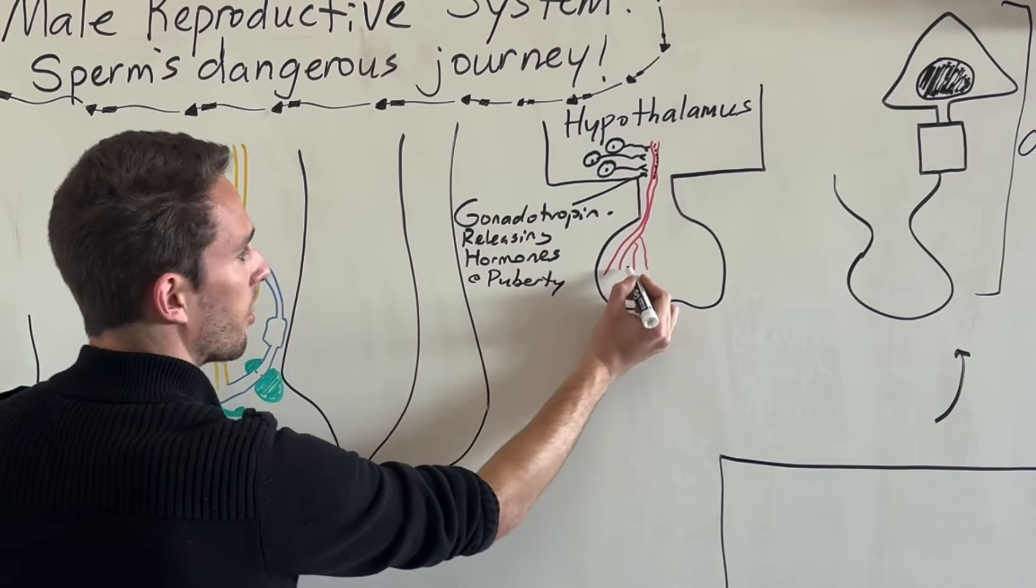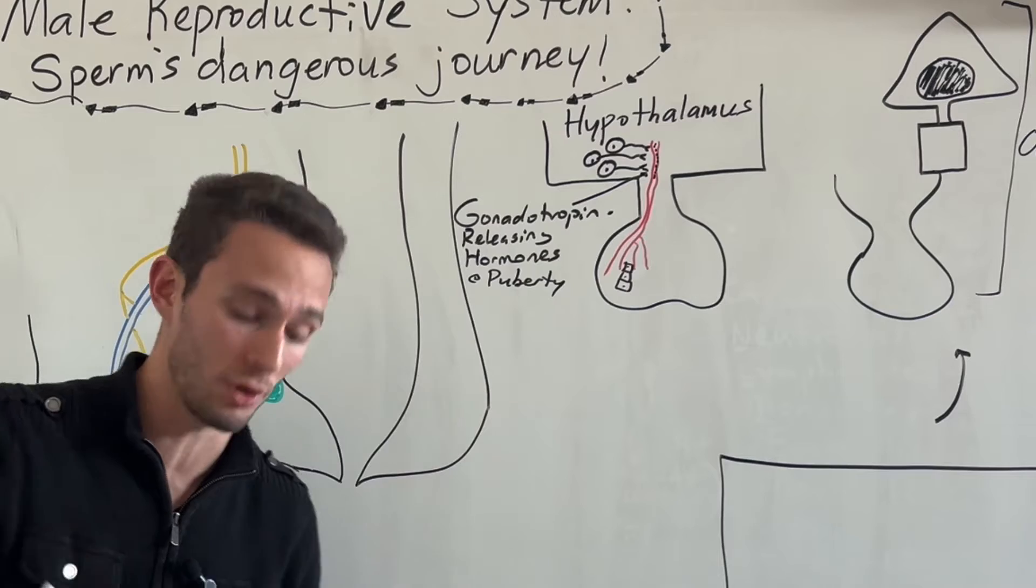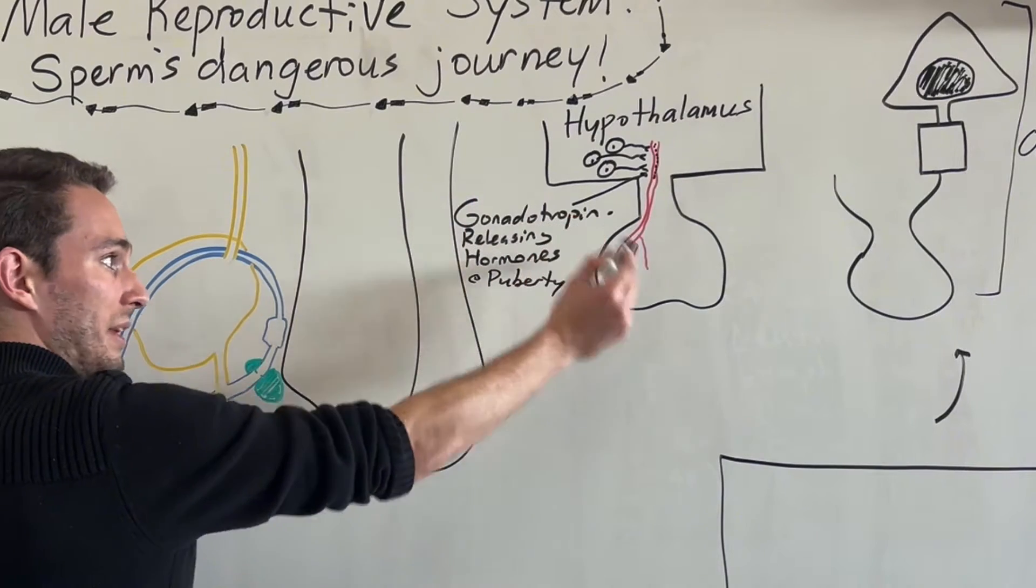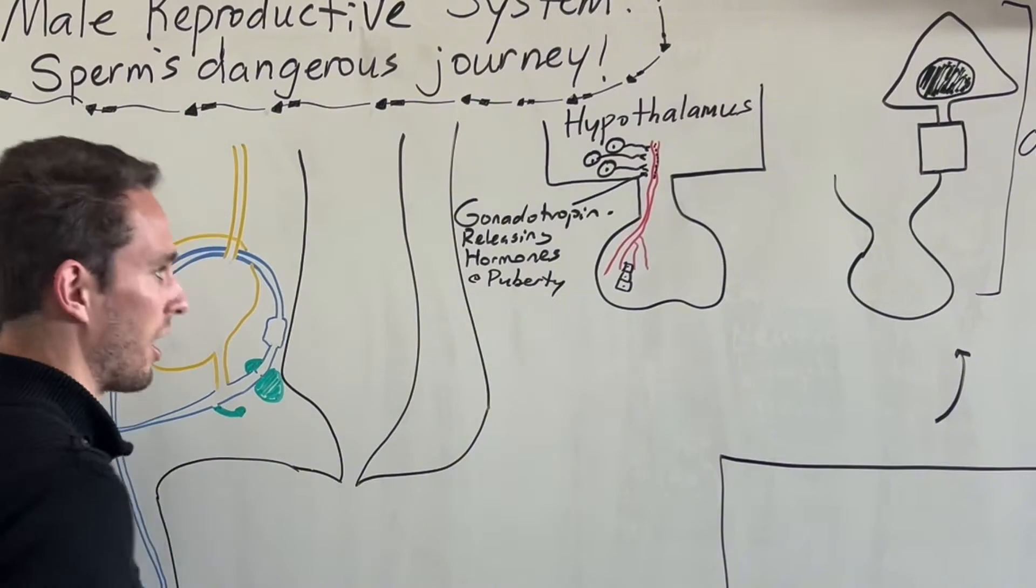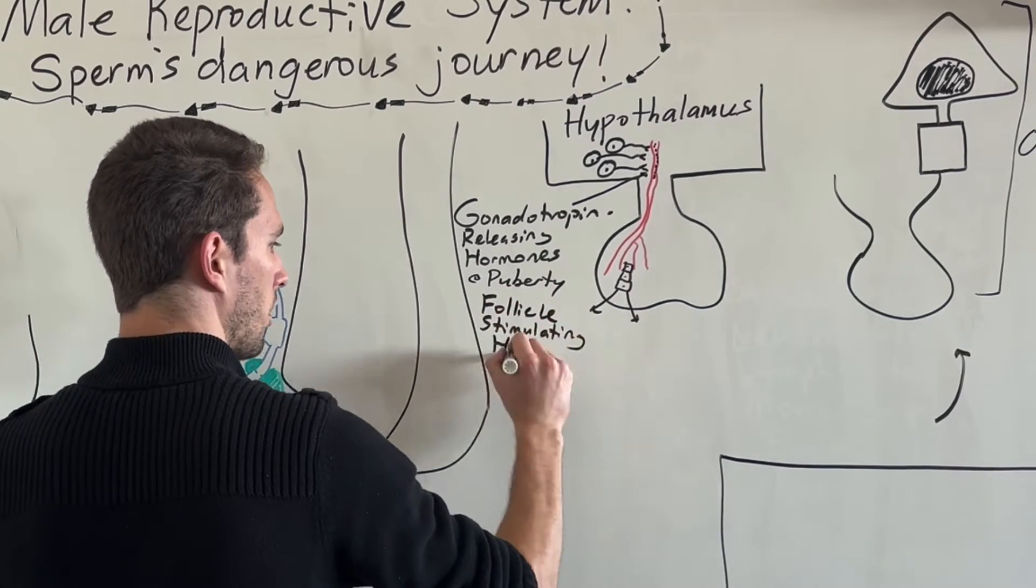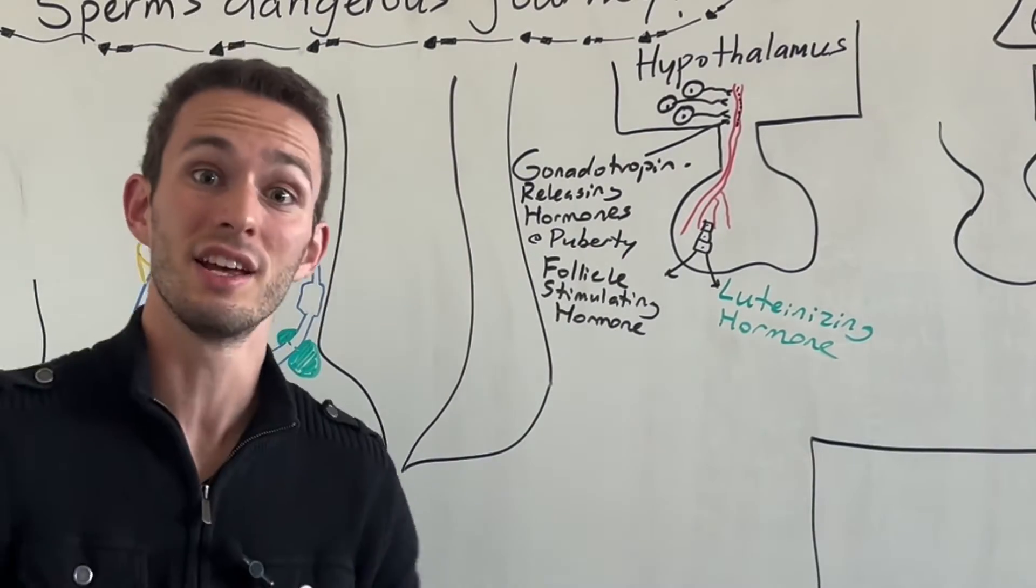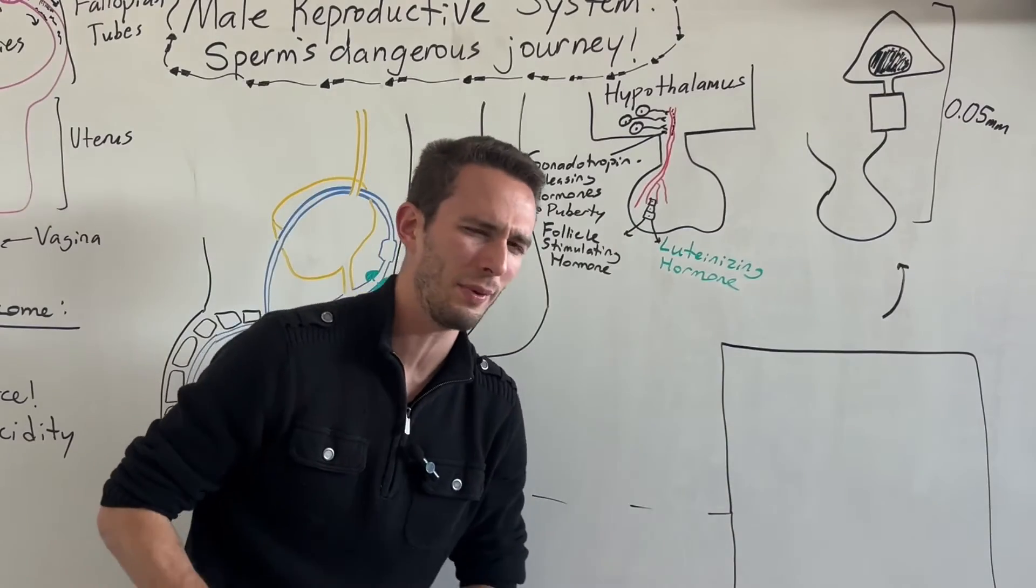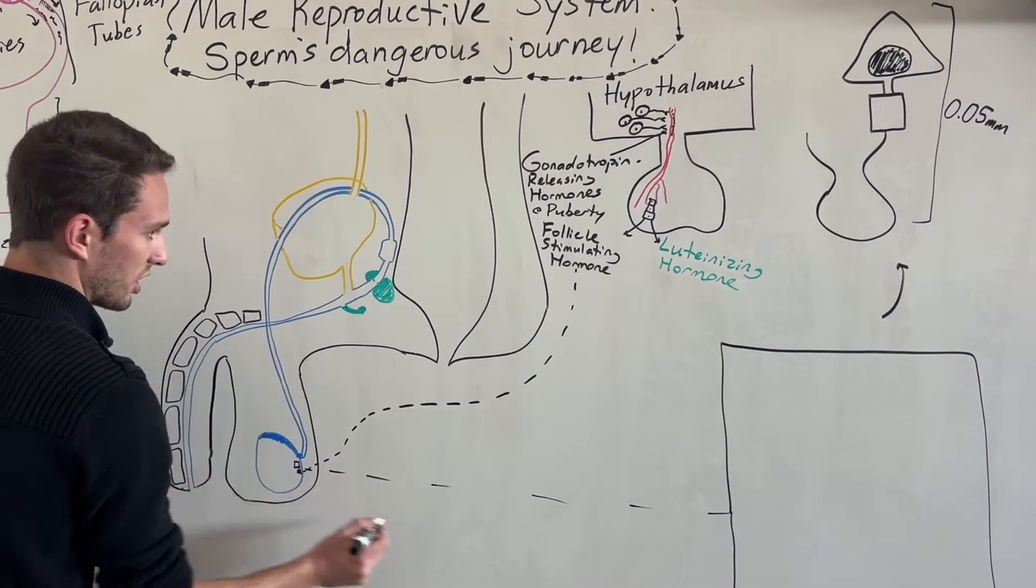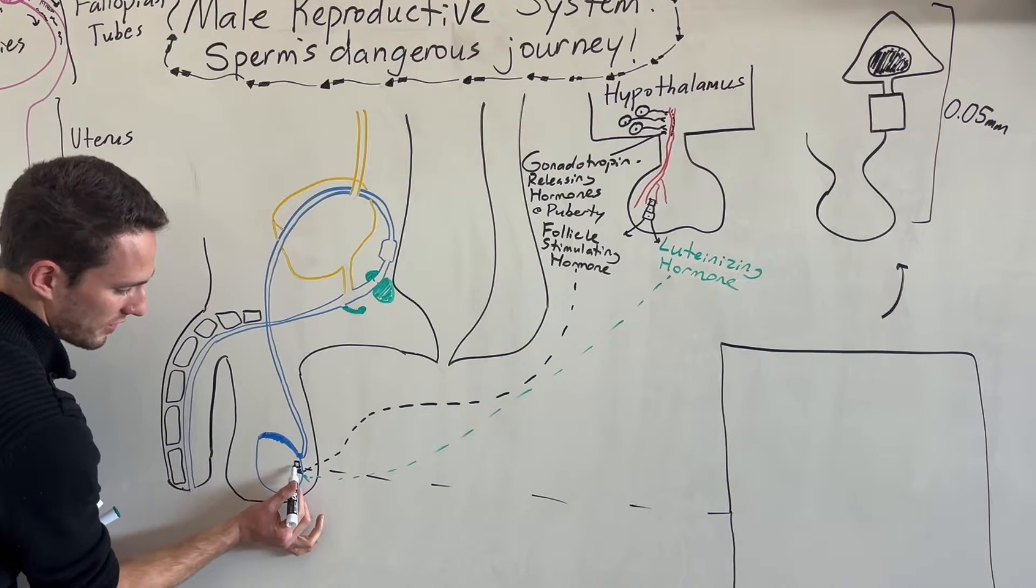These are released at puberty and they're going to travel down to the anterior pituitary where there are going to be other cells. These cells basically get that signal, that hormone, take it up, and they're like whoa, okay, we need to start producing some reproductive hormones. Gonads basically means reproductive, tropin means to act upon these cells, and it's going to release those hormones. They will produce two hormones, one called follicle stimulating hormone and one called luteinizing hormone. Once these are produced, they are going to stimulate sex cell production, and in this case, it's going to be our sperm cell.